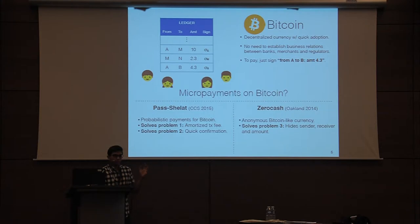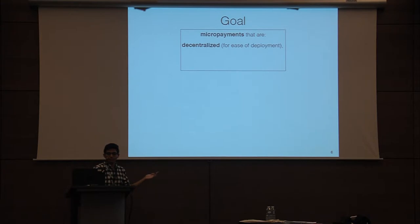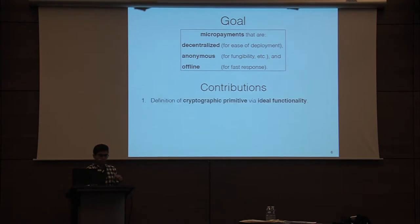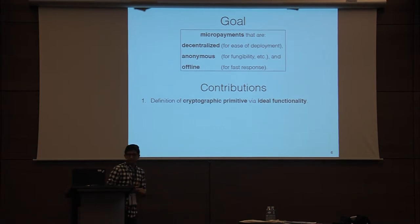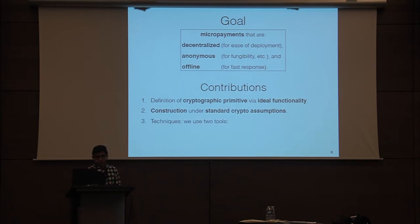What we want is micropayments that combine these two worlds. In more detail, we want micropayments that are decentralized for ease of deployment, anonymous for fungibility and privacy reasons, and offline for the fast response useful for micropayment applications. What we achieve is a definition of a cryptographic primitive with these properties via the ideal functionality, and a construction for this definition under standard cryptographic assumptions like NIZK and commitment schemes.